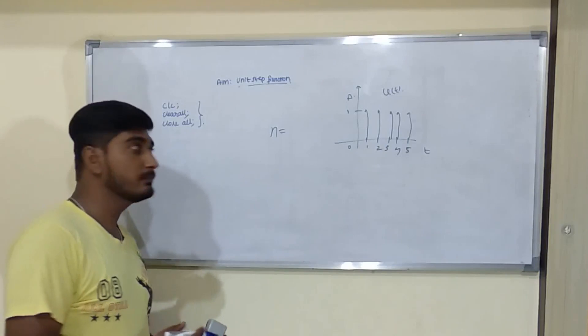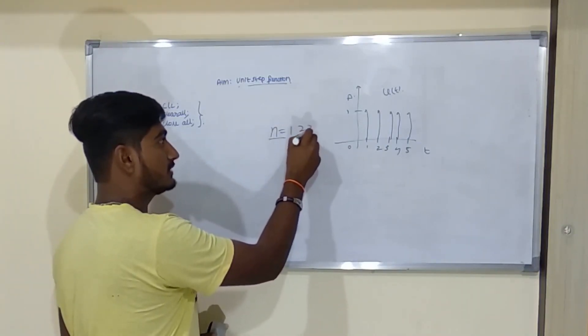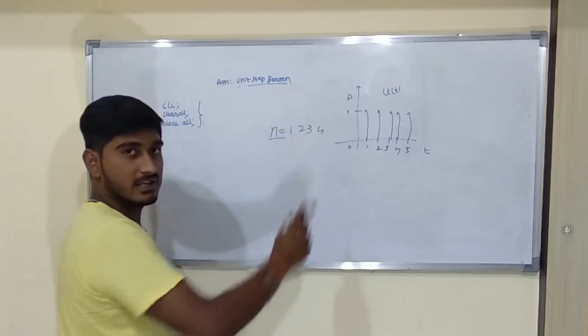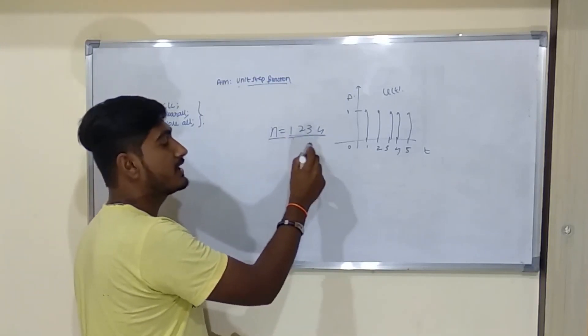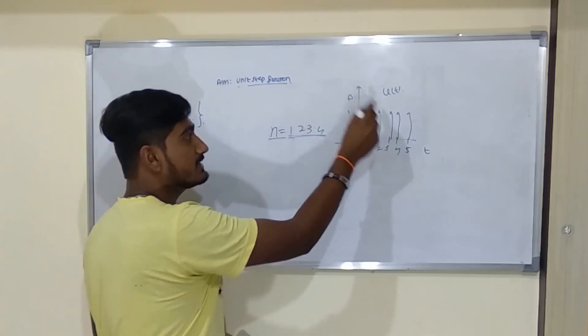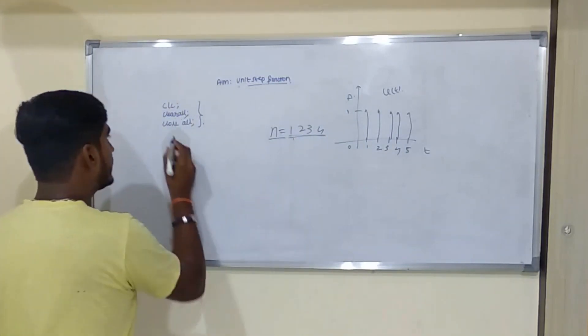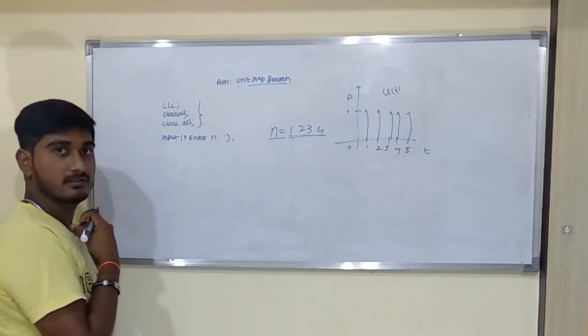So we will ask an input from the user, say n. We need to type this value as 1, 2, 3, 4. Anything you need, a natural number more than 0. So after this, we will take this value as reference and make those points as 1. So let me take an input from the MATLAB window. Input.